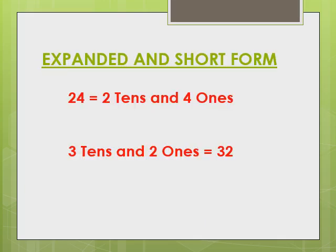Next topic is expanded and short form. For example, 24 can be written in expanded form as 2 tens and 4 ones. 3 tens and 2 ones makes 32. This is called short form.